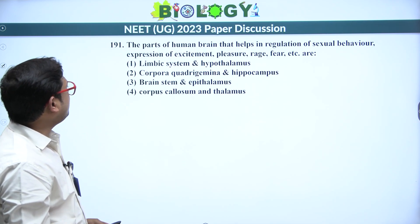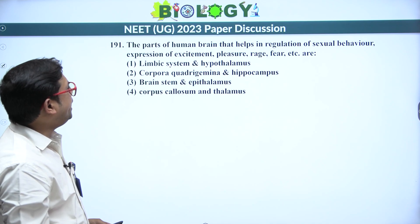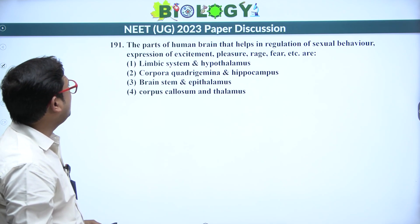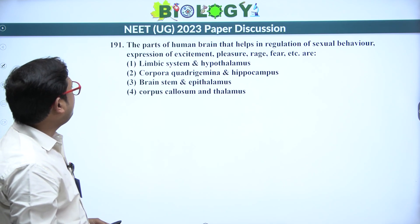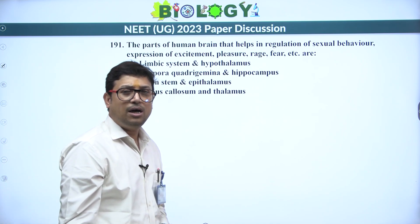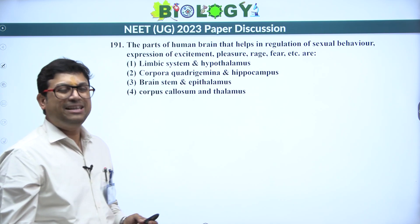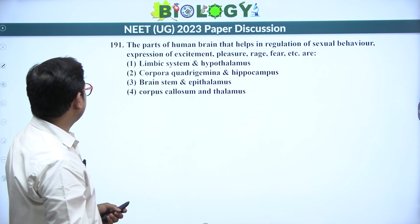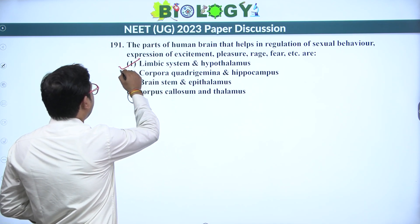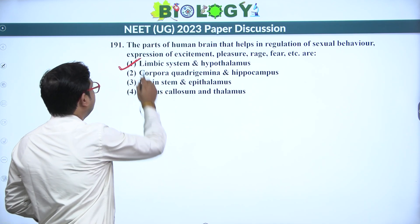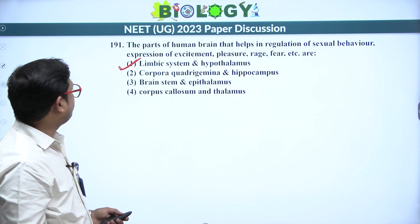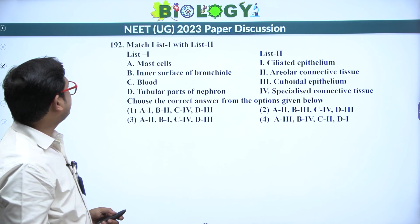Next: the part of the human brain that helps in regulation of sexual behavior and expression of excitement, pleasure, rage, and fear is the limbic system and hypothalamus. This is a direct question.